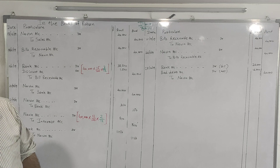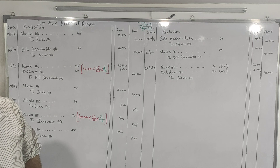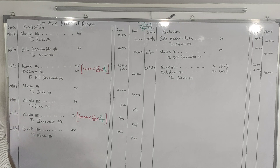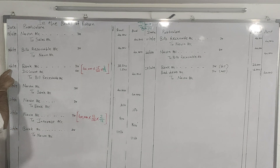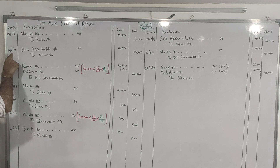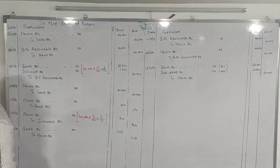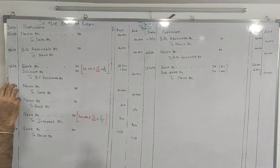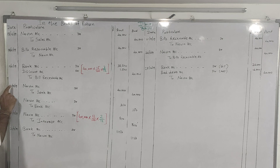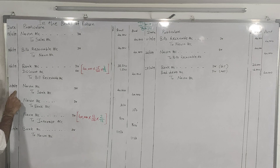On the due date, Navin dishonors the bill and the bank paid noting charges of ₹350. On 18th June the bill was prepared; from 18th June we calculate 3 months — June to July, July to August, August to September — and we add 3 days of grace. So the bill is due on 21st September, and the bill got dishonored on the same date.